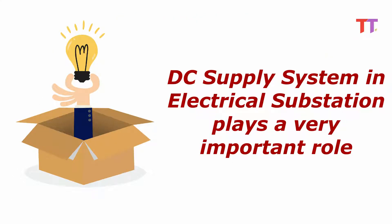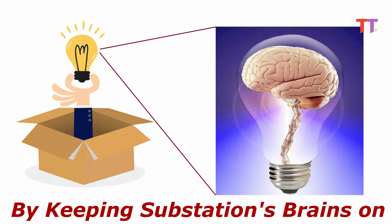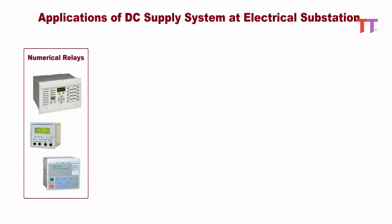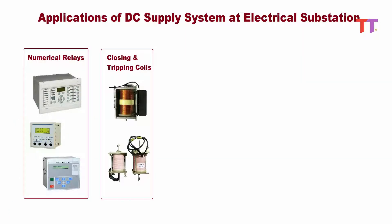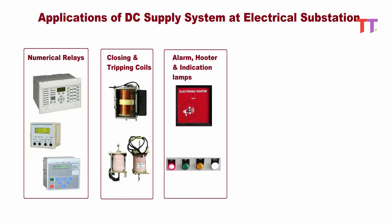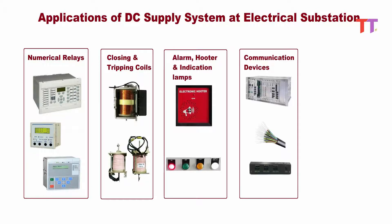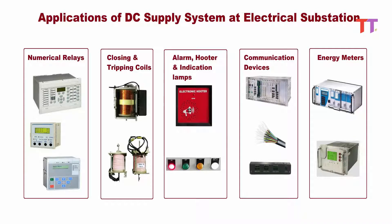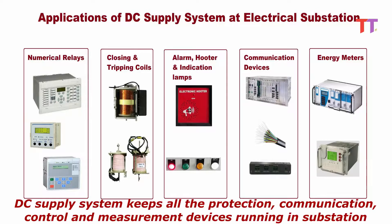DC supply system in electrical substation plays a very important role by keeping the substation's brains on. All modern numerical protection relays, closing and tripping coils, alarms, hooters, indications, and communication devices are powered by DC. Also, some energy meters are powered by DC. Hence, DC supply system keeps all the protection, communication, control, and measurement devices running in the substation.